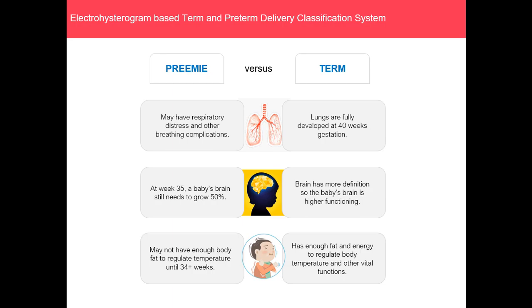What makes it so difficult for a premature baby to survive? It may have respiratory distress and other breathing complications, whereas the term baby's lungs are fully developed at 40 weeks of gestation. For a premature baby at week 35, the baby's brain still needs to grow 50%, whereas a term baby's brain has more definition and is higher functioning. The preterm baby may not have enough body fat to regulate temperature until 34 weeks, whereas the term baby has enough fat and energy to regulate body temperature and other vital functions.